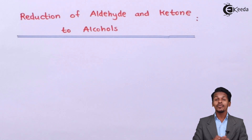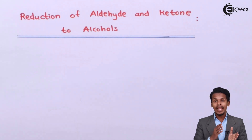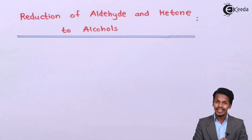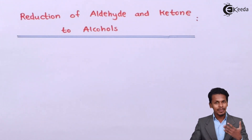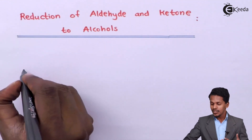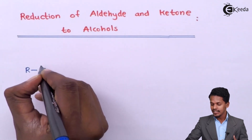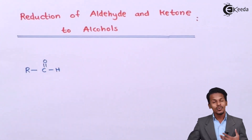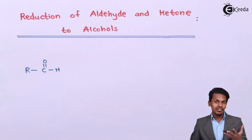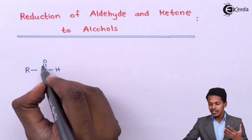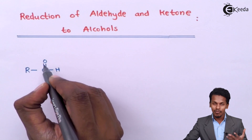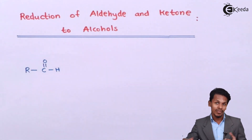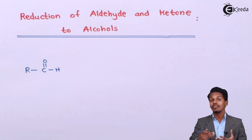So friends, now in this topic we are going to discuss how we can convert an aldehyde or a ketone to the corresponding alcohol. For that let me explain the general reaction. So if we consider the aldehyde, that is R-C double bond O-H, we have to do the reduction — meaning to convert this C=O into a C-O single bond along with OH. That is, we have to convert it into an alcohol.